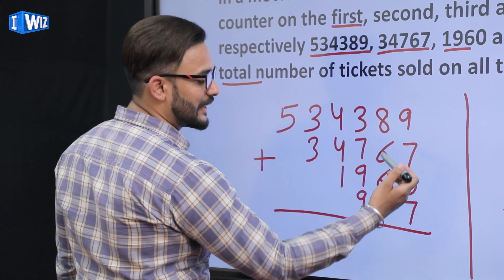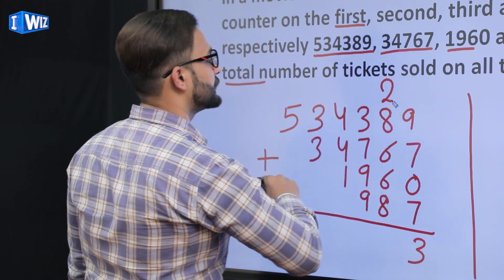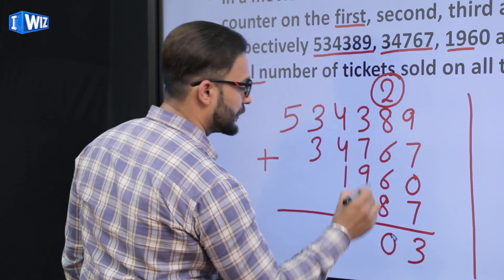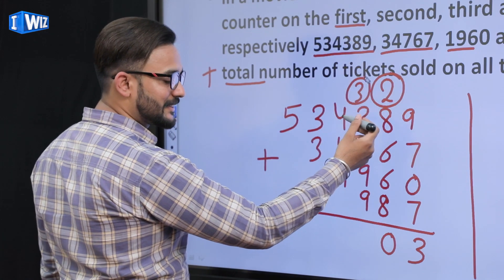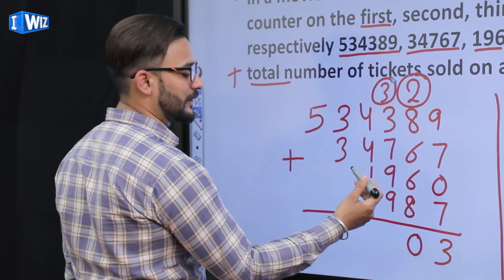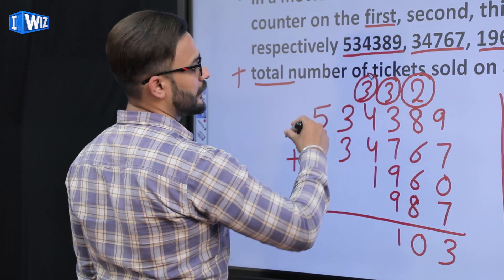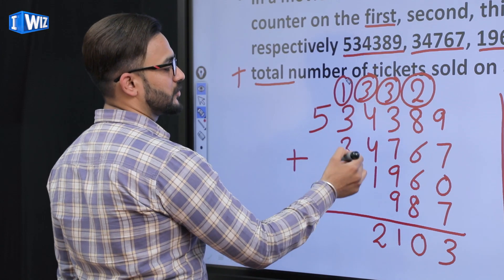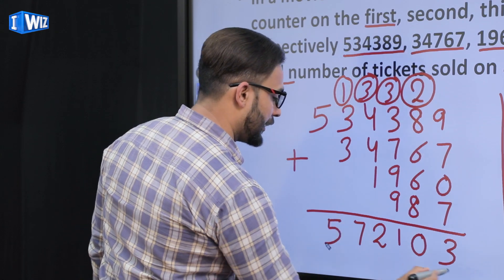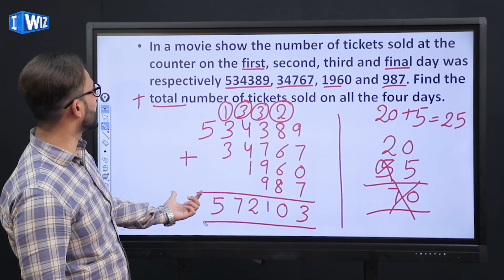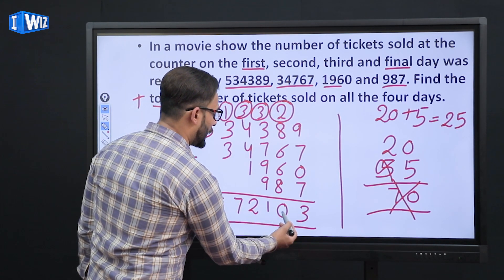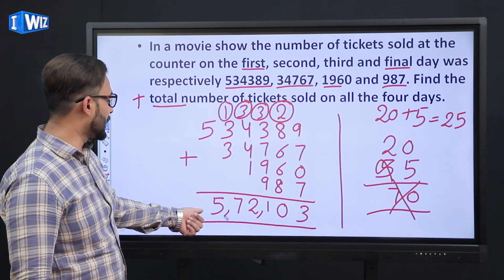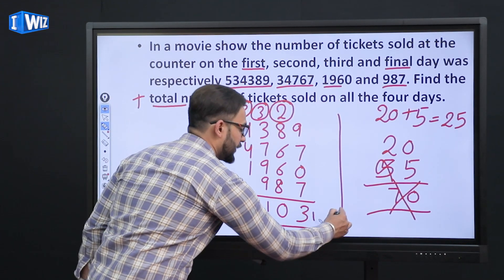Now adding all four days' tickets column-wise: 9+7=16, 16+7=23, write 3 carry 2; 2+8=10, 10+6=16, 16+6=22, 22+8=30, write 0 carry 3; 3+3=6, 6+7=13, 13+9=22, 22+9=31, write 1 carry 3; 4+4=8, 8+1=9, 9+3=12, write 2 carry 1; then 3+3=6, 6+1=7, and the last digit remains. Total tickets sold across 4 days = 5,72,103.